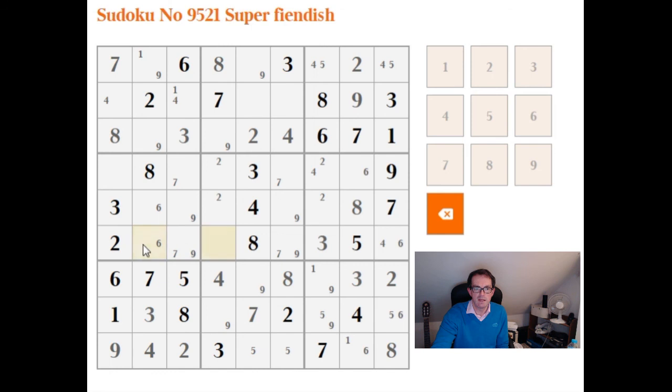And if you make that deduction, you're able to scan across and you know this cannot be a 6, because the 6 is either going to be here or here. So this is going to be a 4. And ironically, you then get to the point you'd have got to had you guessed one of these numbers earlier. So this being a 4, this will be a 4, this a 5, this will be a 6, etc. And the puzzle will fall.